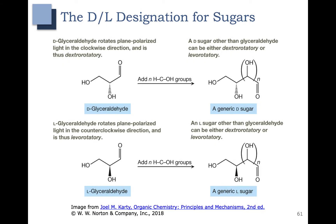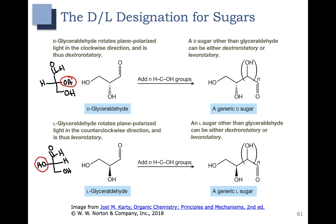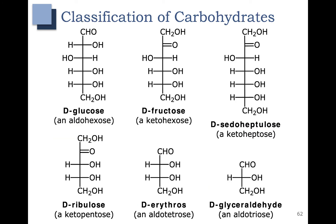Sugars are designated as either D or L sugars. The D/L designation is based off of glyceraldehyde. D-glyceraldehyde is shown here with the OH sticking back, and L-glyceraldehyde is shown here with the OH sticking out at us. That means a D sugar has the same orientation of the OH group as D-glyceraldehyde, and an L sugar has the same orientation as L-glyceraldehyde. In the Fischer Projection, when the aldehyde is on the top and the CH2OH is on the bottom, the OH is on the right for a D sugar. For an L sugar drawn in the same orientation, the OH would be on the left. Looking at several carbohydrate examples, if we look at the second to last carbon, the OH group is on the right, giving us a D sugar.